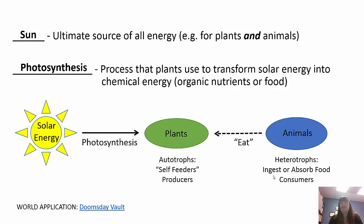Plants are called autotrophs — they are the producers of the food chain. They are self-feeders, meaning they make their own food. Animals are heterotrophs, so they ingest or absorb their food. There's also a video on the doomsday vault at the bottom of the slide — make sure you're in slideshow mode in order to watch it.